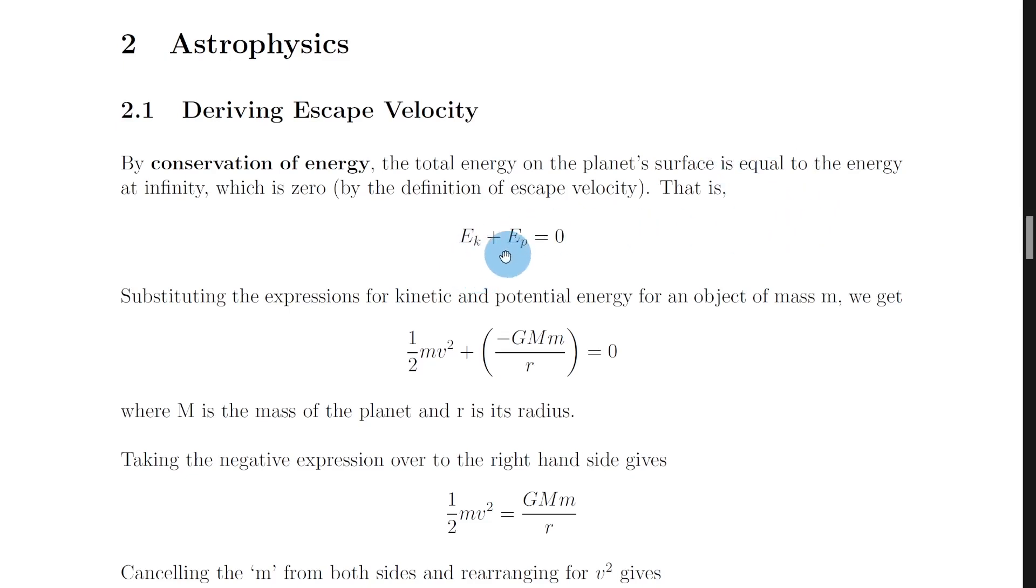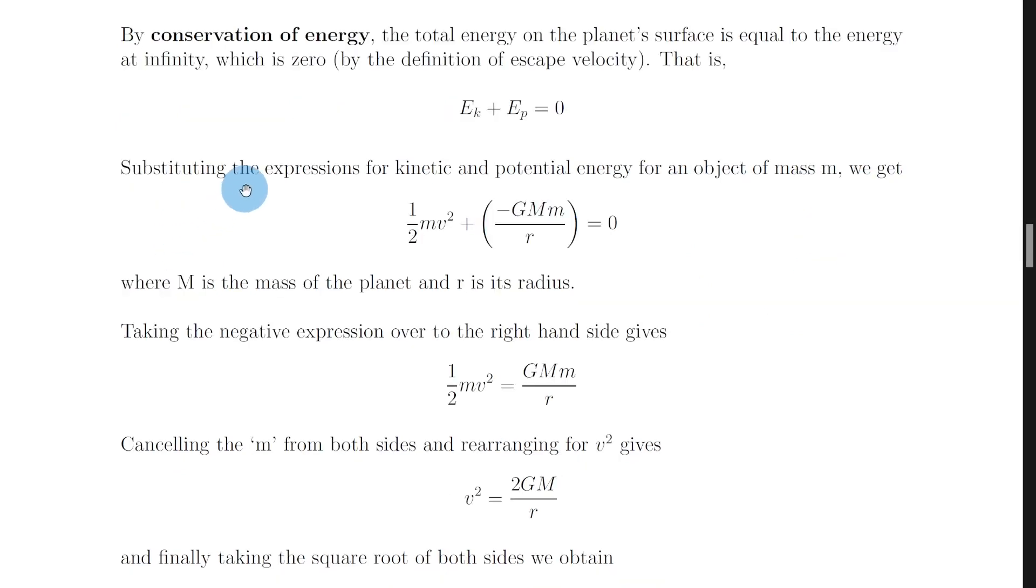So that means we can write Ek plus Ep is equal to zero, and that's our starting point. What we then want to do is substitute in the expressions for kinetic and potential energy for an object of mass m, and both of these are on your relationship sheet.